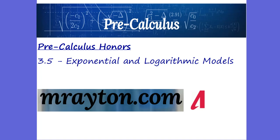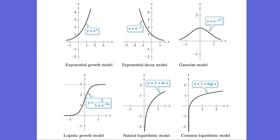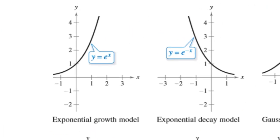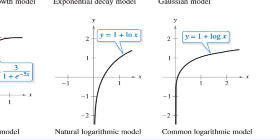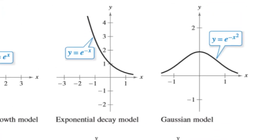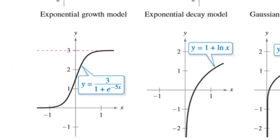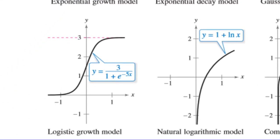Hey, this is Mr. N. This is the last section in Chapter 3, and we're going to be doing exponential and logarithmic models. There are some great models we've studied so far: exponential growth models such as e to the x, exponential decay models such as e to the negative x, the natural logarithmic model, the common logarithmic model, as well as the Gaussian model and the logistic growth model.